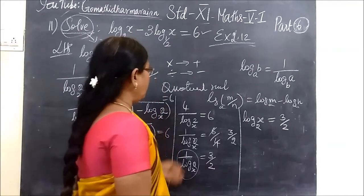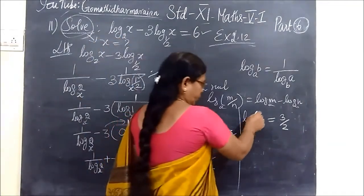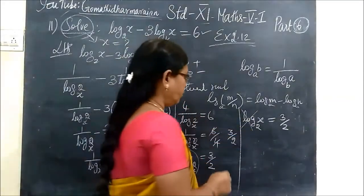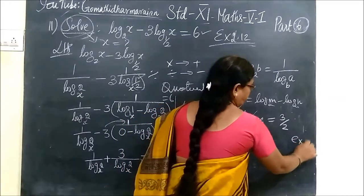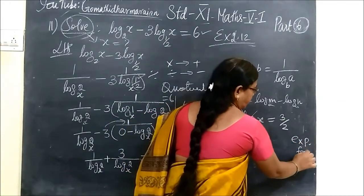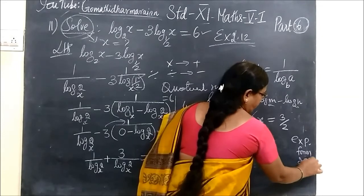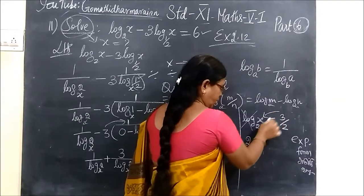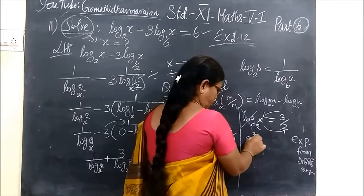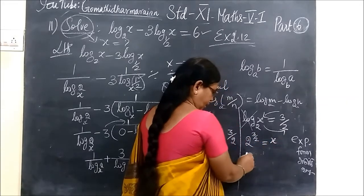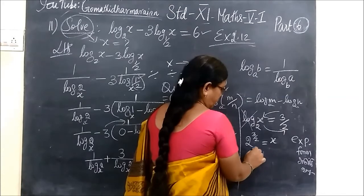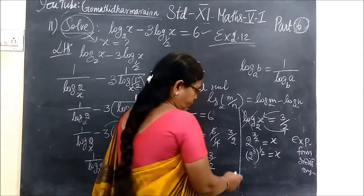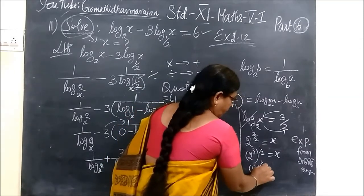Now you apply that logarithmic form, when we create logarithmic form, we are going to change it to exponential form. So this can be written as 2 to the power of 3/2 is equal to x. 2 to the 3/2 is nothing but 8. So 8 power of 1/2 is equal to x.